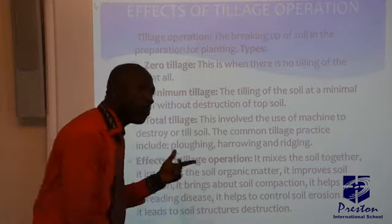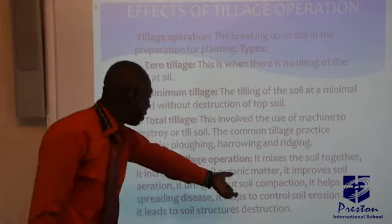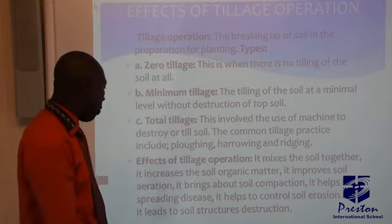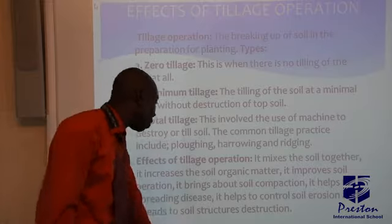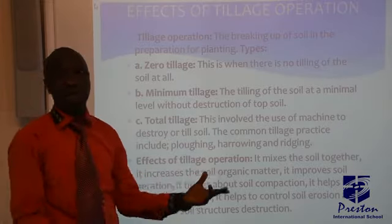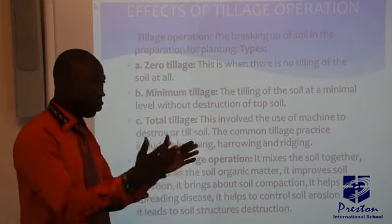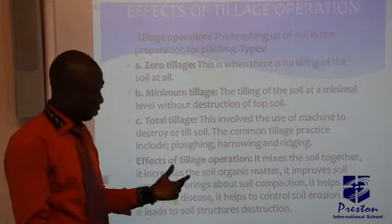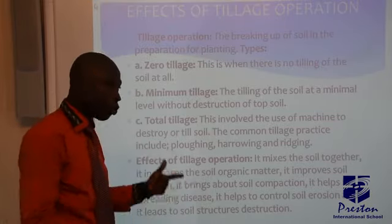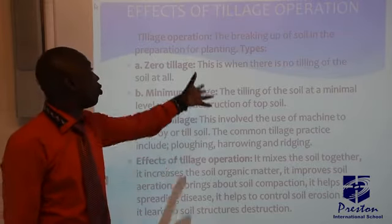Tillage also increases soil organic matter, improves soil aeration, brings about soil compaction, and leads to soil structure destruction. When you use machines to work on the soil it will displace certain things in the soil, so the structure will be affected. But everything is geared towards achieving a better result at the end of the day.